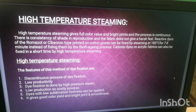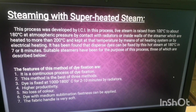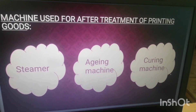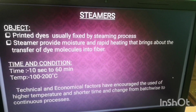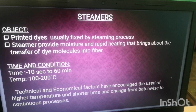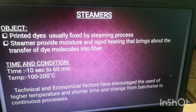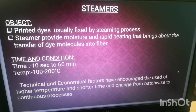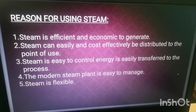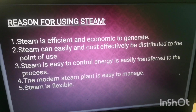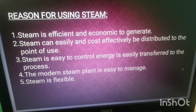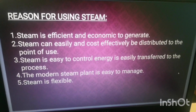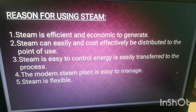Machines used for after treatment of printing goods: first, steamer; second, aging machine; and third, curing machine. Objective of steaming: printed dyes are usually fixed by the steaming process. A steamer provides moisture and rapid heating that brings about the transfer of dye molecules into the fiber. Steam is used because it is efficient and economic to generate, can easily and cost-effectively be distributed to the point of use, is easy to control, and the modern steam plant is easy to manage and flexible.